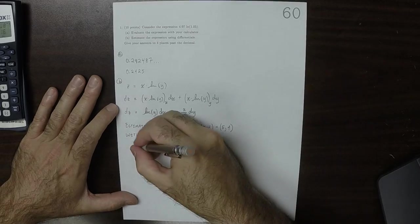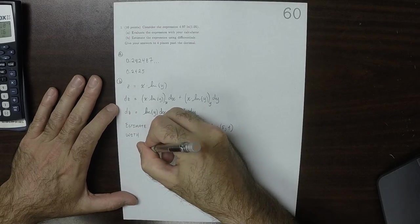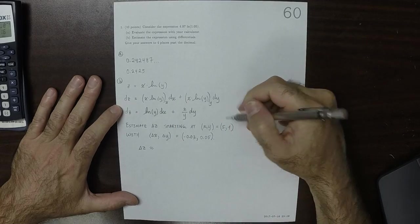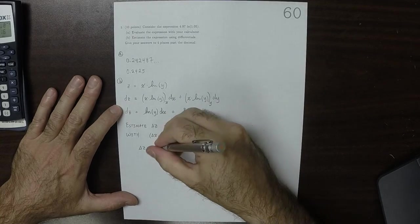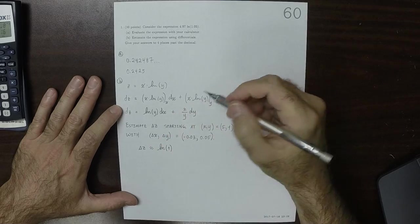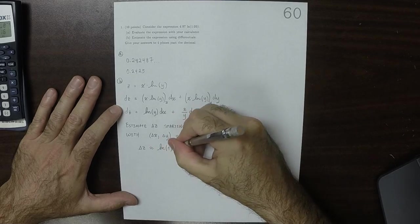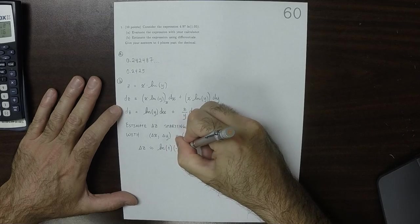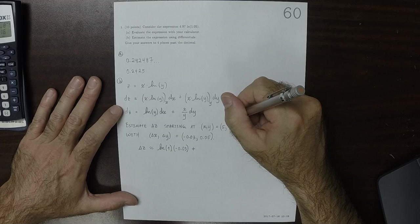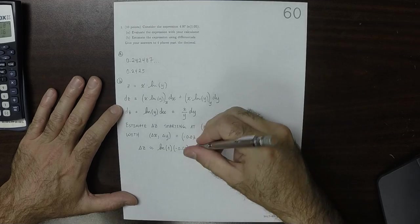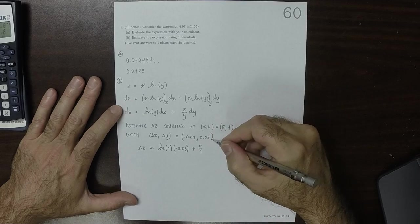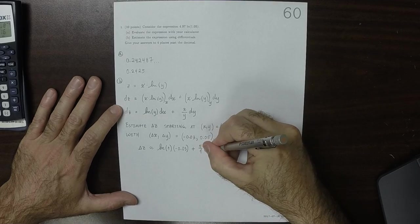So delta z is approximately the natural log of 1, so the natural log of 1 times delta x, which is negative 0.03, plus x over y, so that would be 5 over y, so that would be 5 over 1, times delta y, which is 0.05.